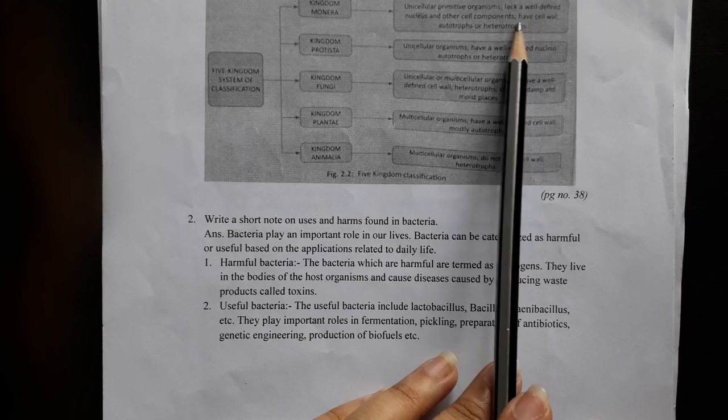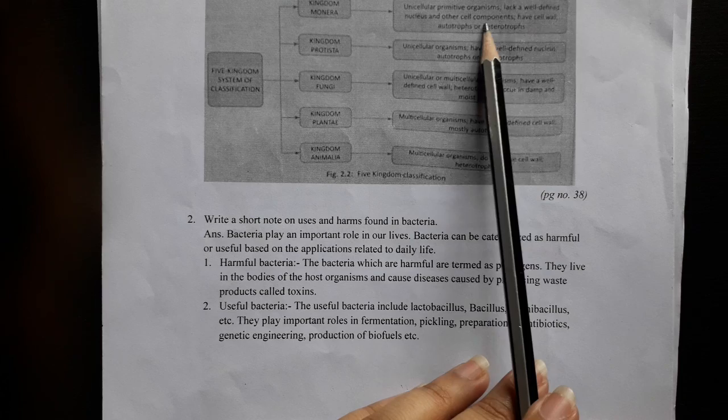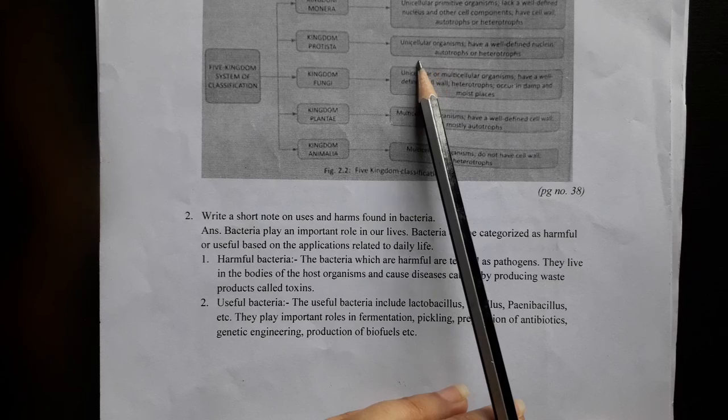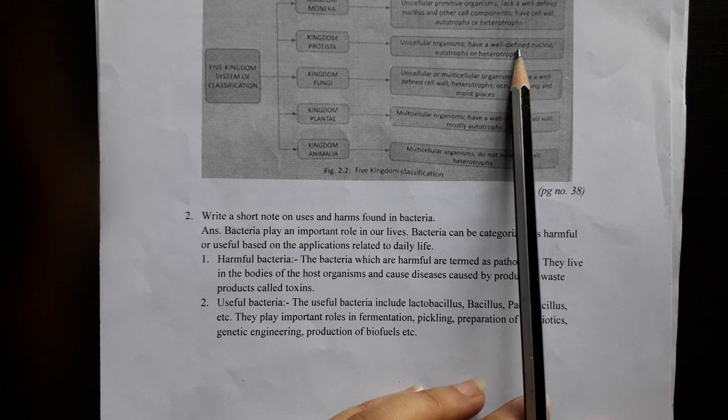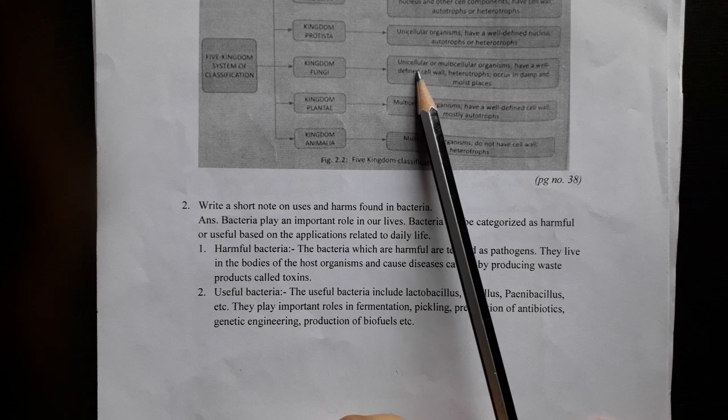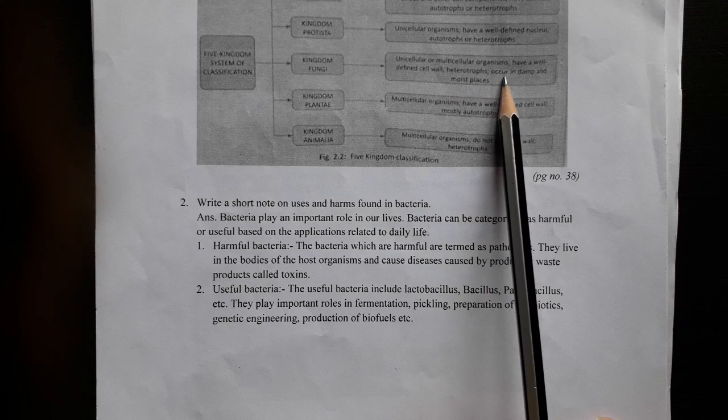Kingdom Monera organisms may lack a well-defined nucleus; they can be autotrophs or heterotrophs. Kingdom Protista contains unicellular organisms with a well-defined nucleus; they may be autotrophs or heterotrophs. Kingdom Fungi contains unicellular or multicellular organisms with a well-defined cell wall; they are heterotrophs and occur in damp and moist places.